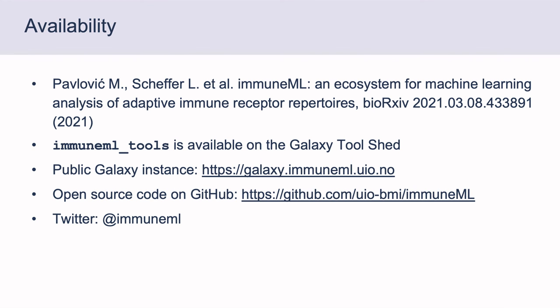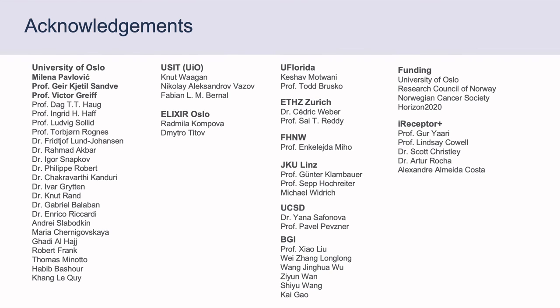If you use ImmuneML, please cite our preprint, which is out on BioRxiv. The ImmuneML tools are available on the Galaxy toolshed, so you can install them on your own local Galaxy instance, or use our Galaxy instance at galaxy.immuneML.uio.no. The ImmuneML command line tool can be found on GitHub, and for the latest updates you can follow the Twitter account at ImmuneML. Finally, I would like to thank all colleagues, collaborators, and funding that made this project possible.